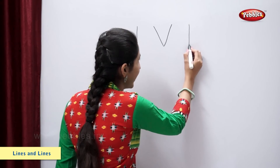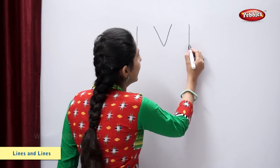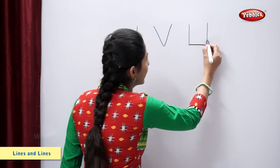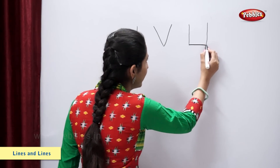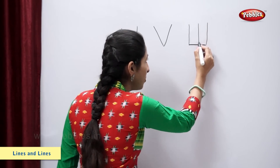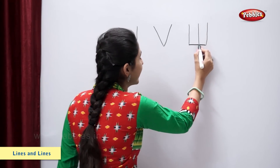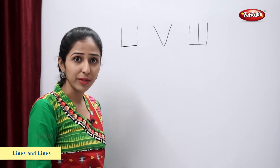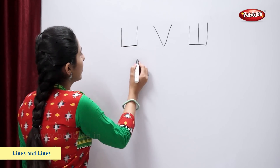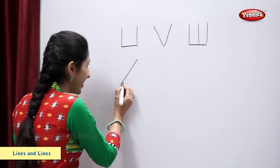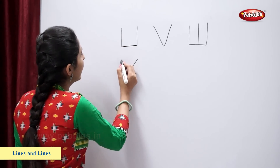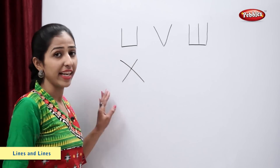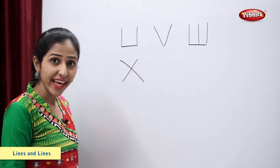Standing line, sleeping line. Standing line, one more standing line — letter W. Slanting line, another slanting line — letter X.